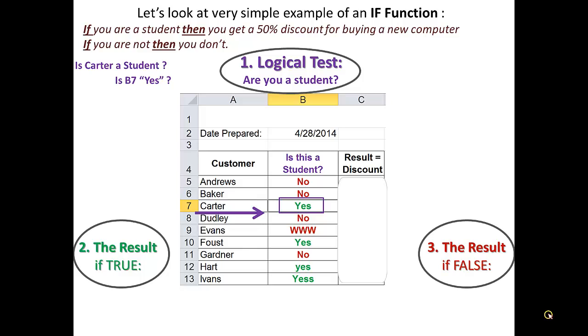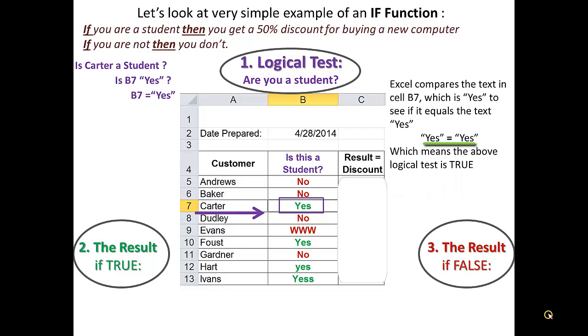Which in mathematical terminology is translated into, is B7 equal to yes? Excel makes a quick comparison and sees that B7 cell has a value that is the same as the text value yes. Yes equals yes, indicates that this logical test is true. The result, if true in our case, is 50% discount.